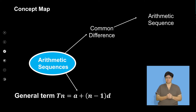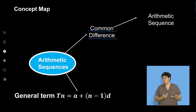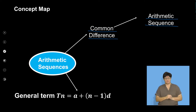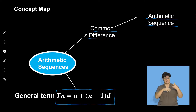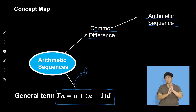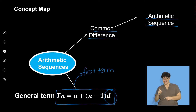I have discussed this in previous lessons, but in case this is your first time with us today, arithmetic sequences have a common difference — this is the main property of an arithmetic sequence. I'm going to be talking about the general form of an arithmetic sequence, which is Tn is equal to a plus n minus 1 times d. A is representative of the first term of a particular pattern, and d is the common difference.